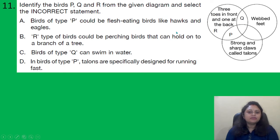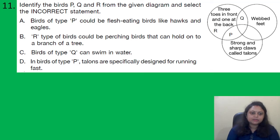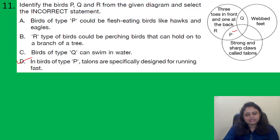Next question: Identify birds P, Q, and R from the given diagram and select the incorrect statement. Option D states: in birds of type P, talons are specifically designed for running fast. However, in birds of type P — which have three toes in front and one at the back with strong sharp claws called talons — the talons are designed for gripping prey, not for running. So option D is the incorrect statement, and the correct answer is option D.